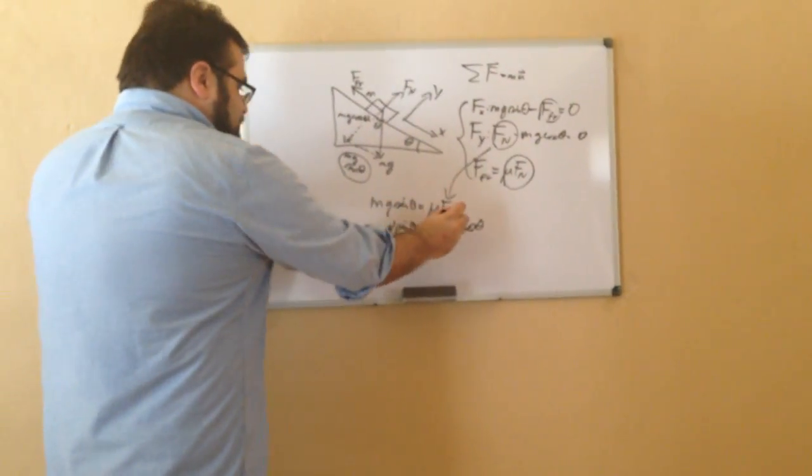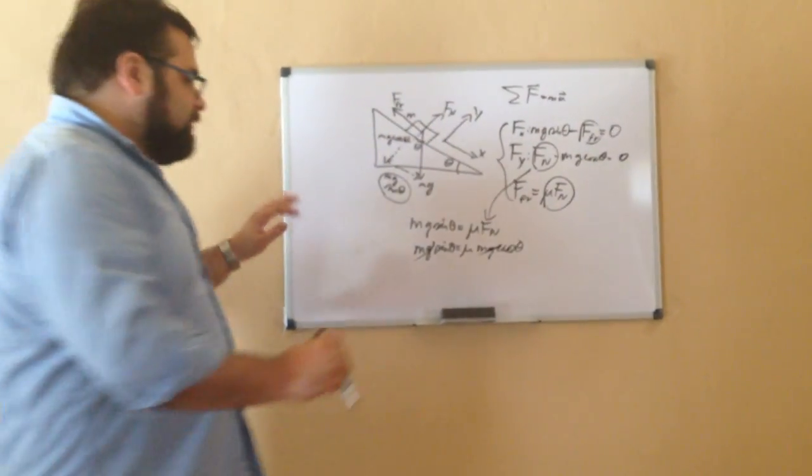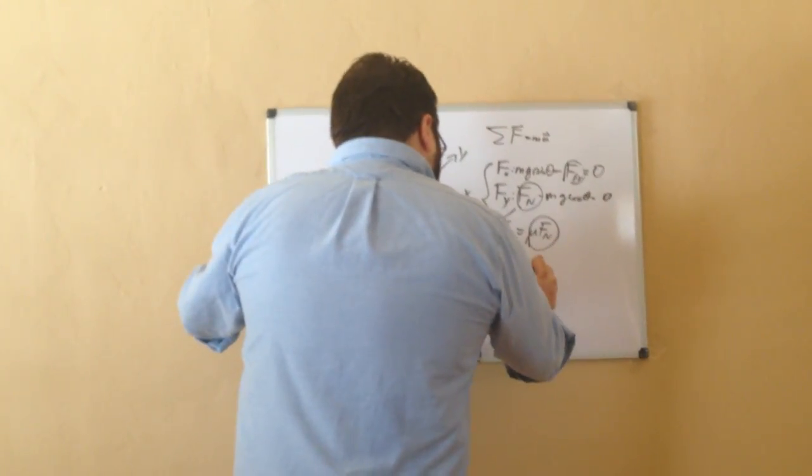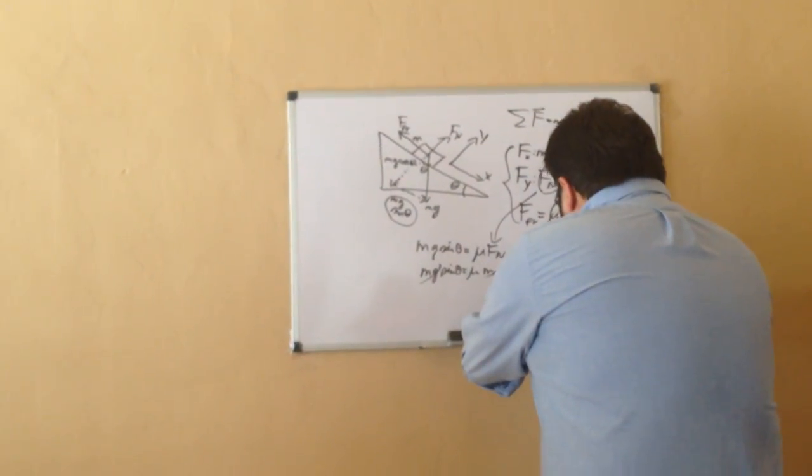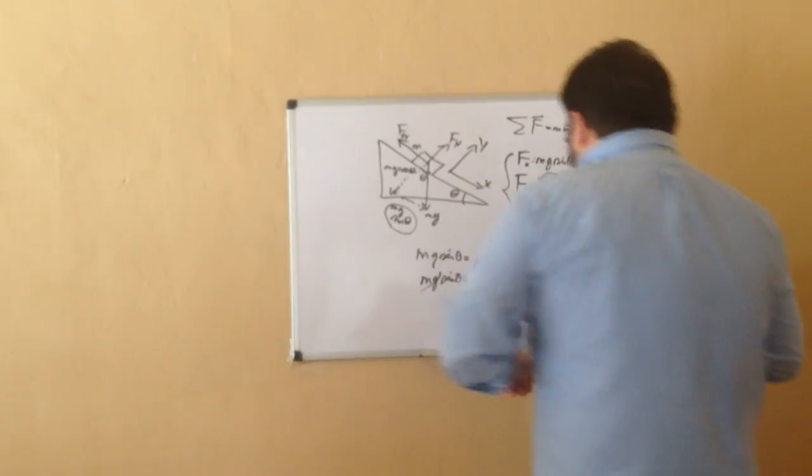You can see there's an mg on both sides. They cancel. So you actually don't need to know the mass of the block to do this experiment. And after you complete everything, the answer you'll get is: tan theta equals mu.